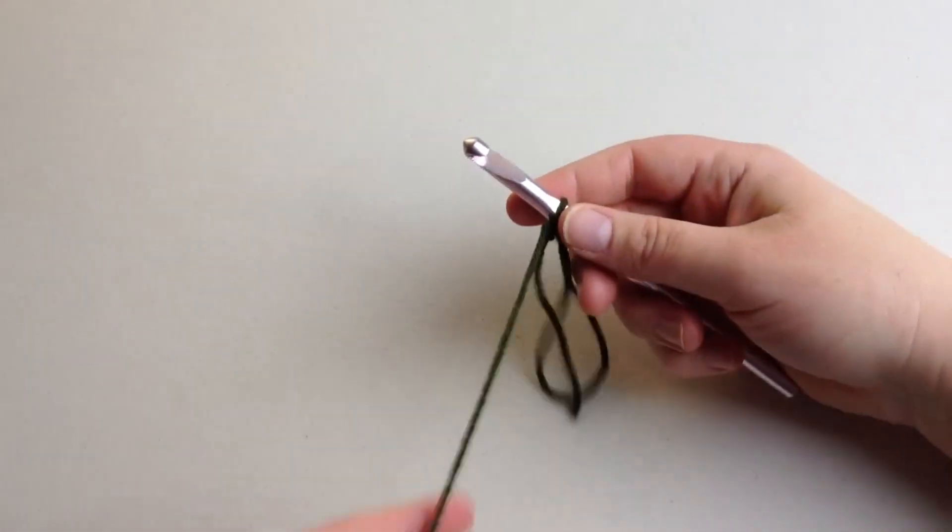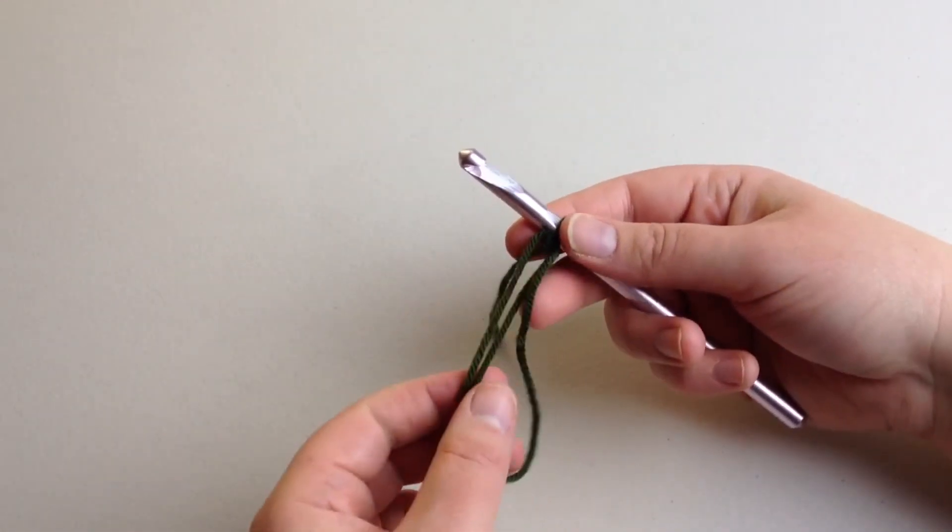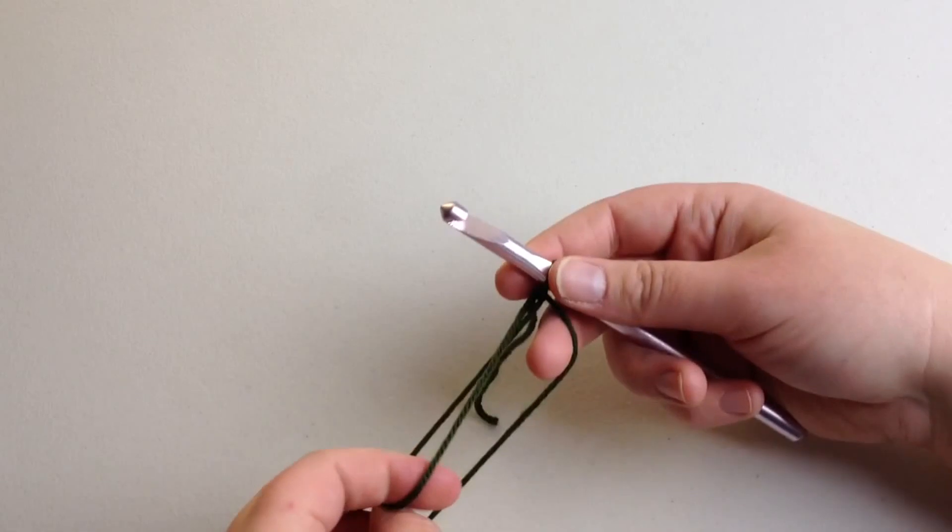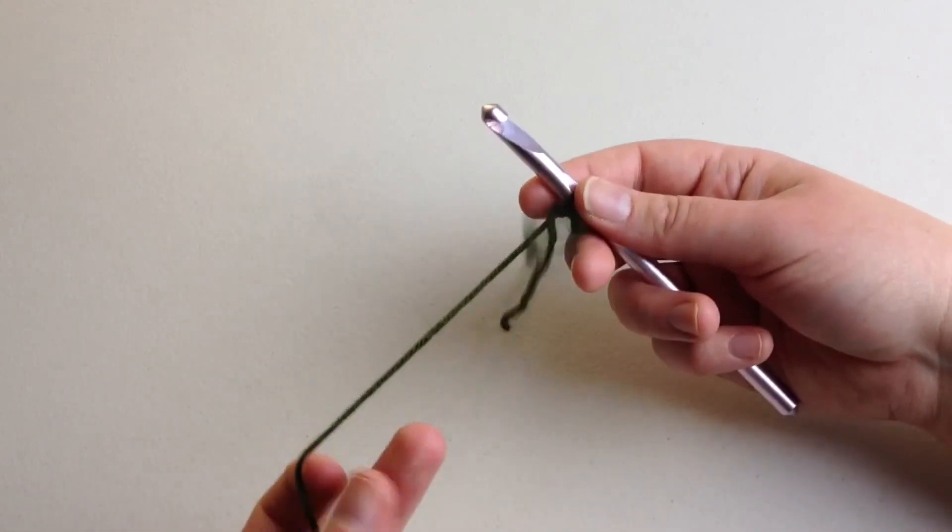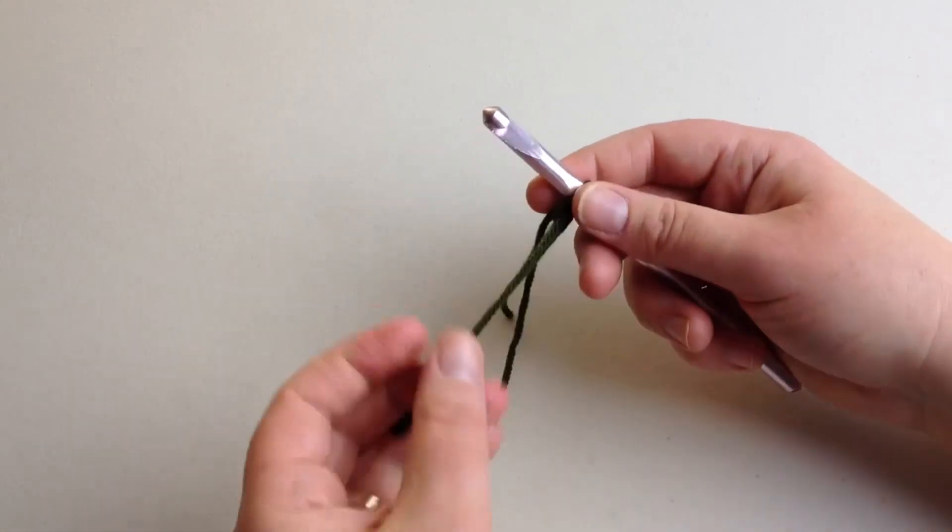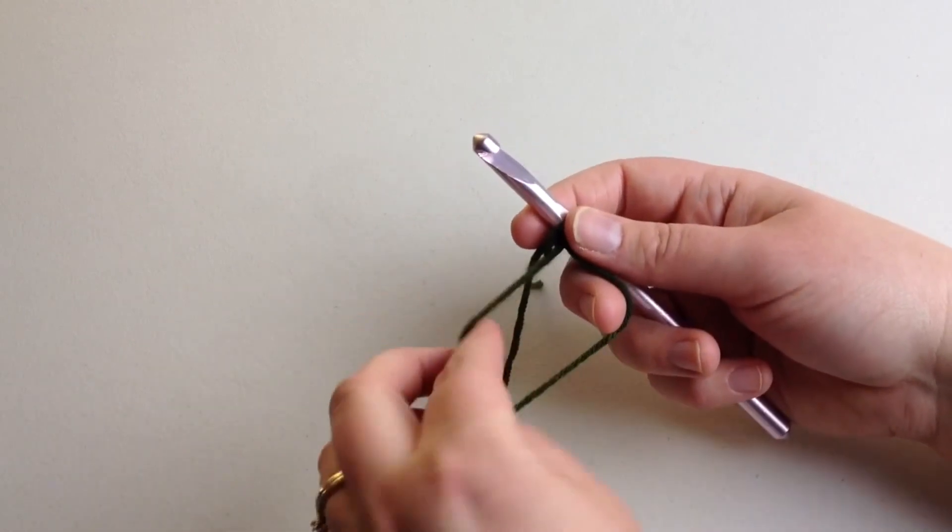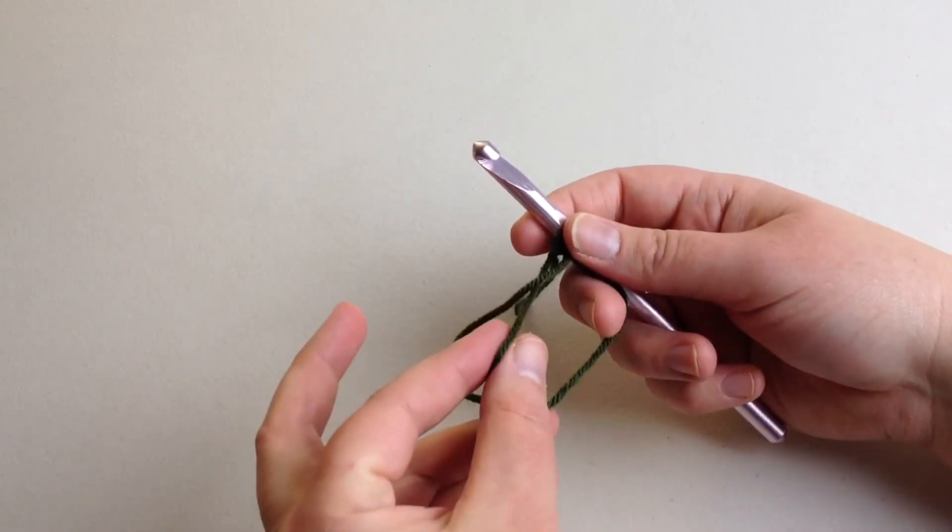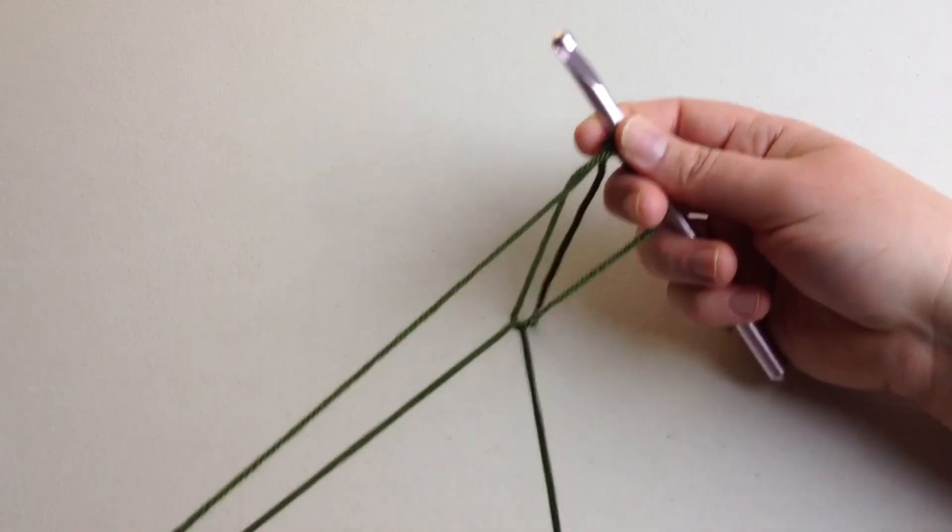As we're working with the three strands together and going along on our project, all of a sudden we find this little short loop and it's no longer three strands. You want to open up your loop, go through the middle, and pull through on the working strand.